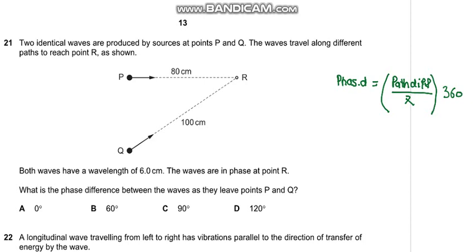So let's first find the path difference. In order to find the path difference we must know that we have a wavelength of 6 cm. So this would become 80 by 6 lambda which would be 40 by 3 lambda. In terms of lambda this is PR, and this 100 by 6 would become 50 by 3 lambda. So the path difference would be QR minus PR. QR minus PR would become 50 by 3 minus 40 by 3.